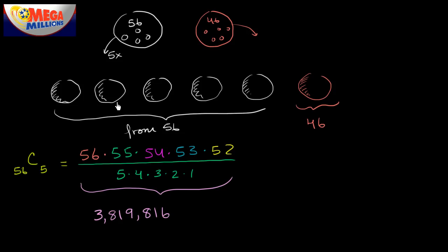So that's the number of possibilities here. So just your odds of picking just the white balls right are going to be one out of this, assuming you only have one entry. And then there's 46 possibilities for the orange ball.